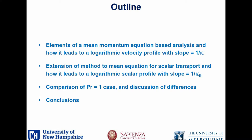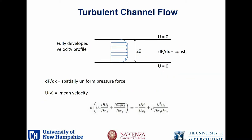Let's consider turbulent channel flow. This is a two-dimensional channel flow, infinitely wide, infinitely long. The walls are spaced two delta apart. We have no-slip walls, and it's driven by a spatially uniform pressure gradient force. The mean equation of motion is given here — this is just a regular RANS equation — and we'll go ahead and simplify that for this flow configuration.